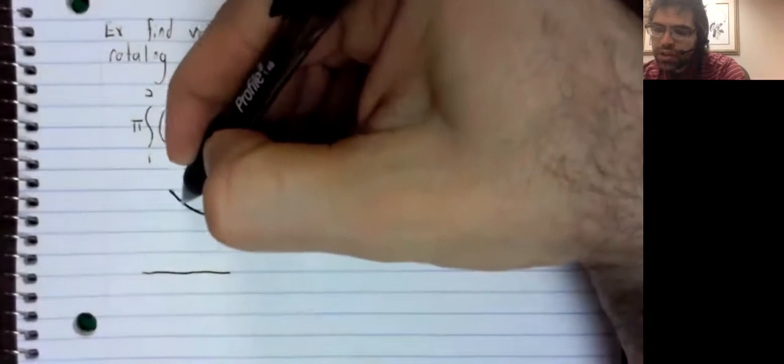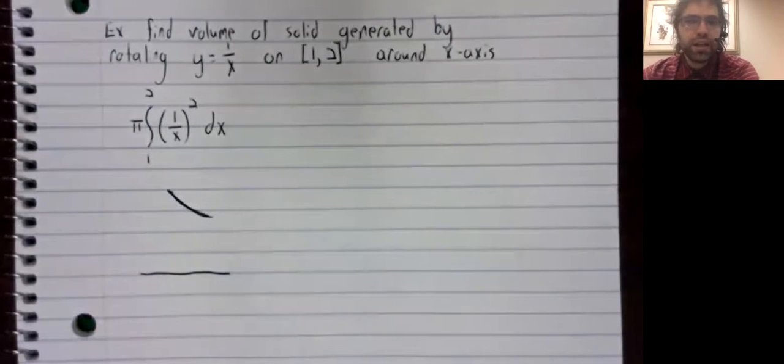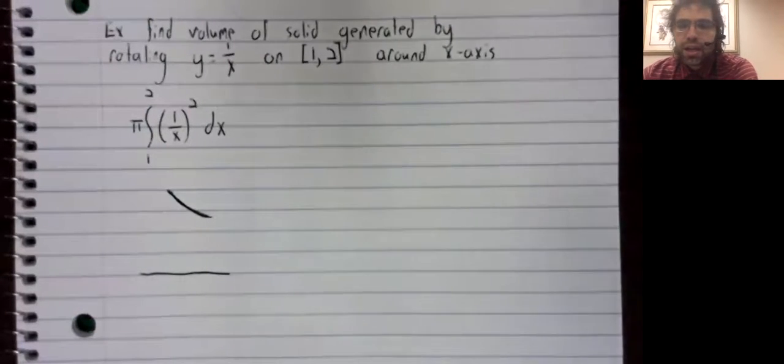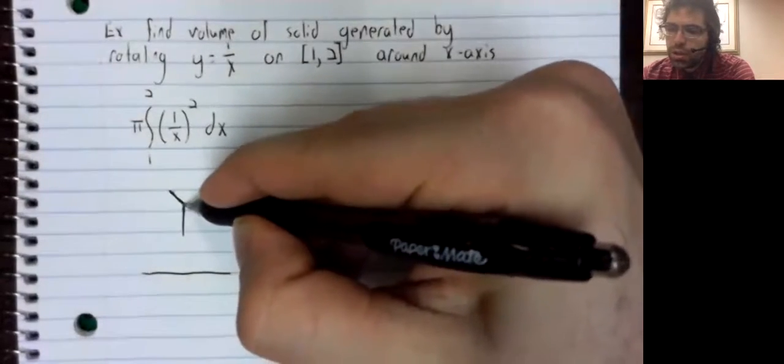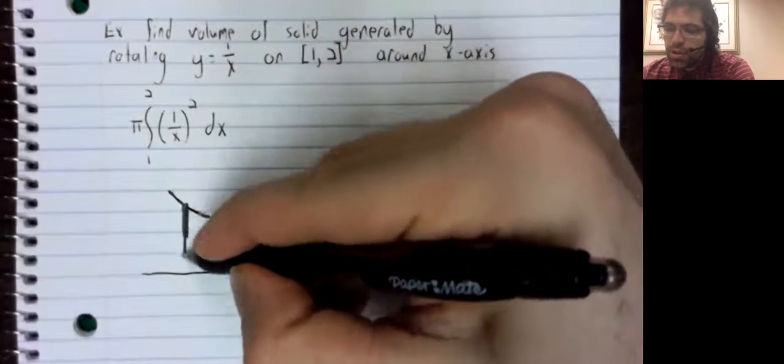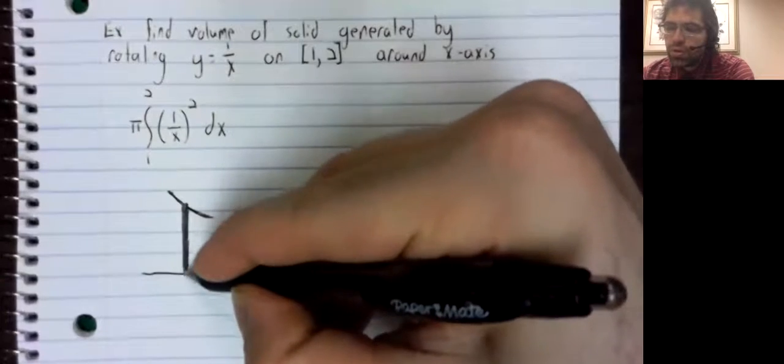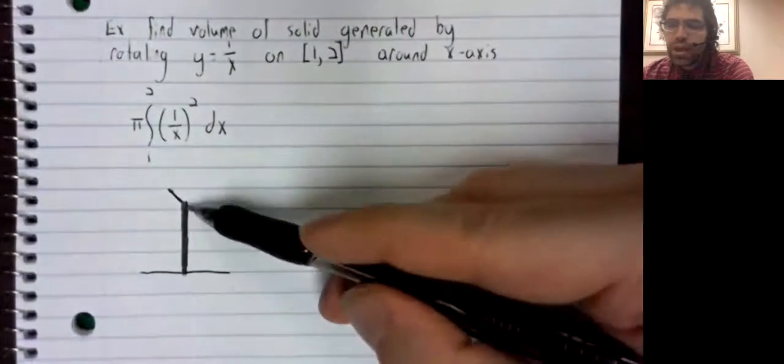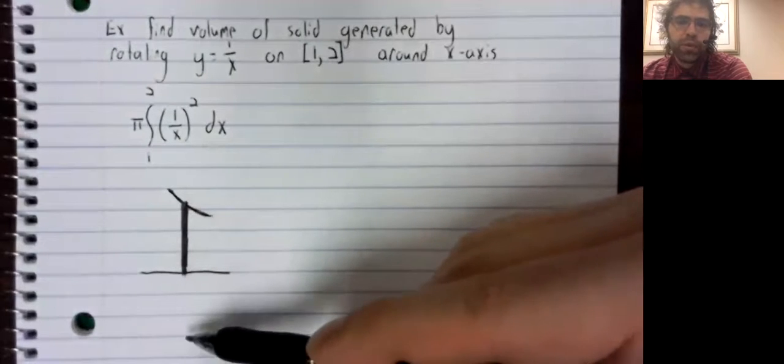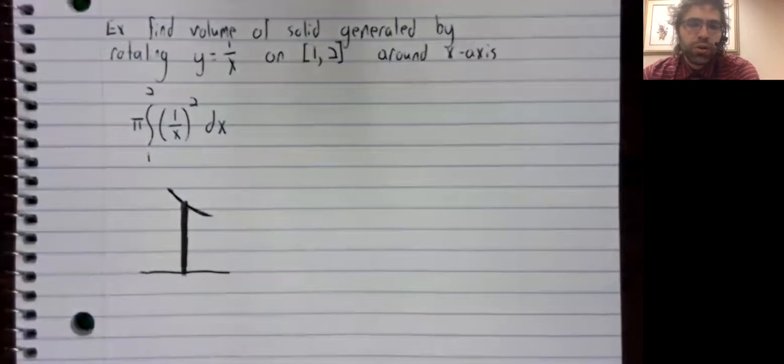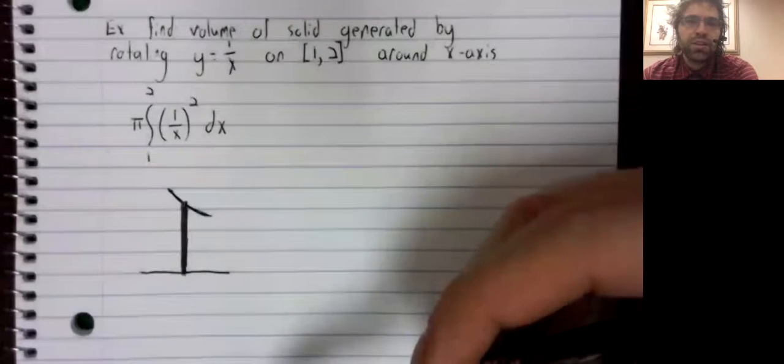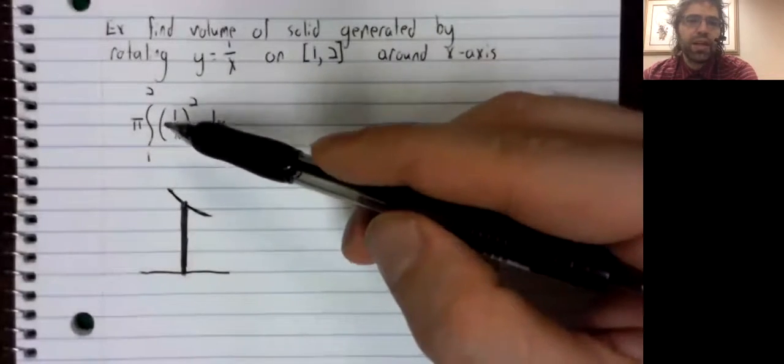We have this curve, 1 divided by x. And where did this integral come from? Well, we took rectangles like this and we rotated them around the axis. And we got cylinders. And we added up the volumes of those cylinders and we took a limit. And that sum became an integral.